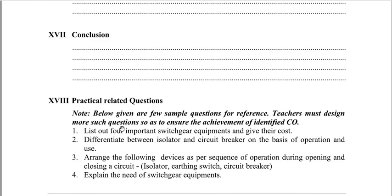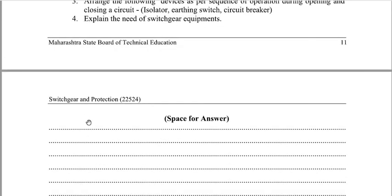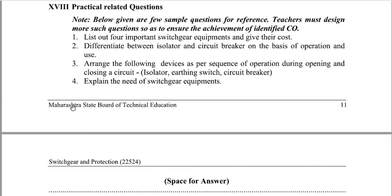The practical-related questions are: first, list four important switch gear equipment and give their cost, which you can find by searching on the internet. Second, differentiate between an isolator and a circuit breaker based on their operation and use. Third, arrange the following devices in sequence of operation during opening and closing the circuit: isolator/switch and circuit breaker. Fourth, explain the need for switch gear equipment. You can write answers on blank or ruling paper.